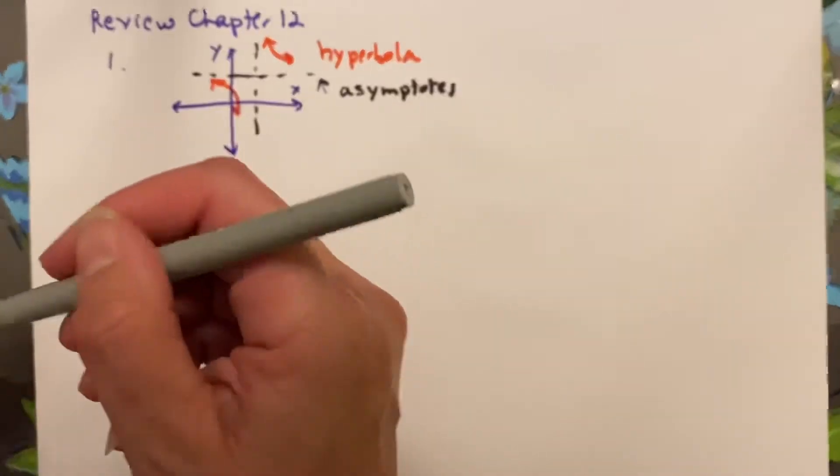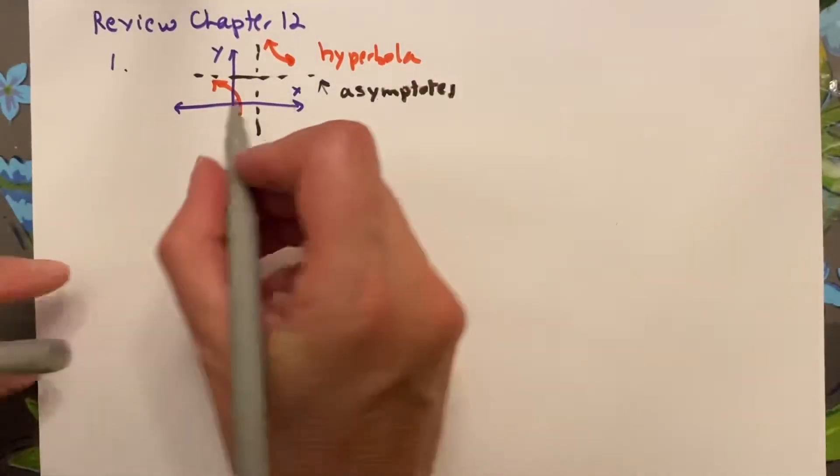And the lines that the hyperbola approaches but doesn't intersect are called the asymptotes. And this is the branches, and you just need to remember what they're called.